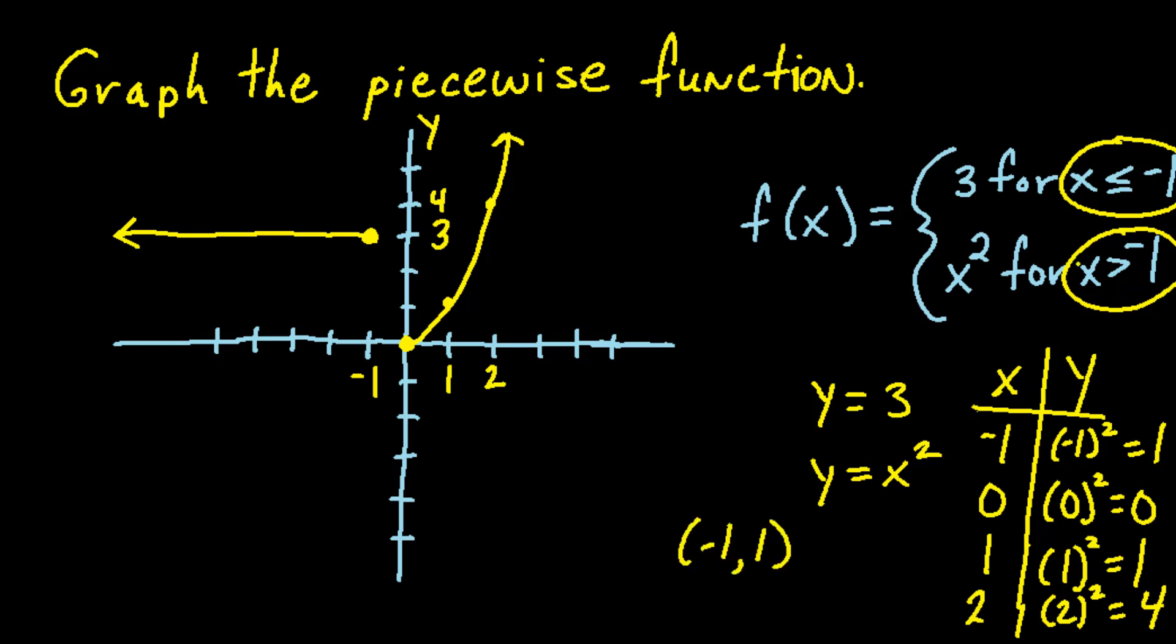Since we are only graphing the equation y equals x squared for all x values greater than negative 1, we want to know where that negative 1 value lies. However, since our equation says that all the x's are greater than negative 1, and not equal to negative 1, that point (-1, 1) will have an open circle on our graph. So we can draw our parabola up to that point. So the graph I have here is the complete graph of the piecewise function, f(x) equals 3 for the values x less than or equal to negative 1, and f(x) equals x squared for the values x greater than negative 1.